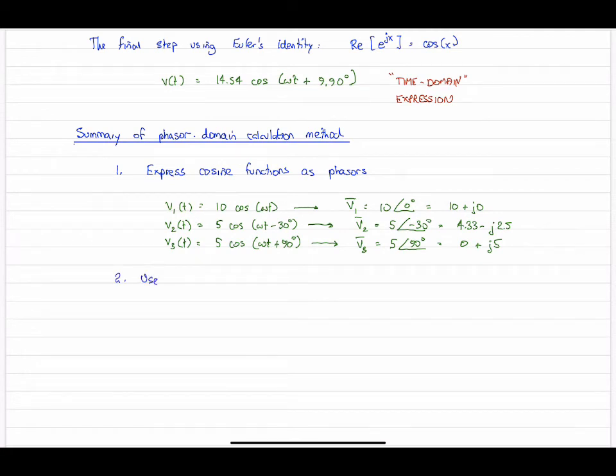Then we do the addition. Step two: use these phasers in the KVL equation. Now we've got numbers, we'll stick them back in the KVL equation. Here it is in phasor form. Let's plug our numbers in, and we get the answer we determined above. Once again, that's 14.54 at 9.9 degrees.